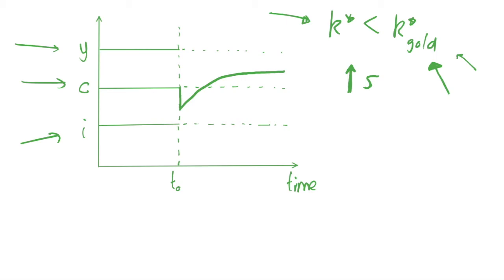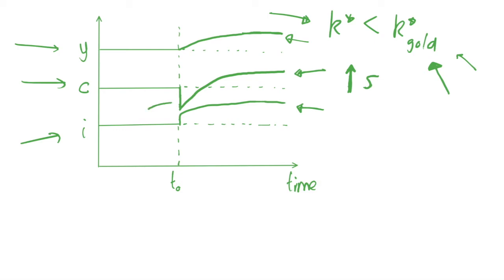Investment is higher at all points in time because we've increased the savings rate, so we're investing more throughout. Using y = c + i, our output per capita in the long run will look something like this — output per capita is higher at every point in time, investment per capita is higher at every point in time, but consumption is not higher in the short run. This curve is below our original dotted line initially, but we move above it in the long run.